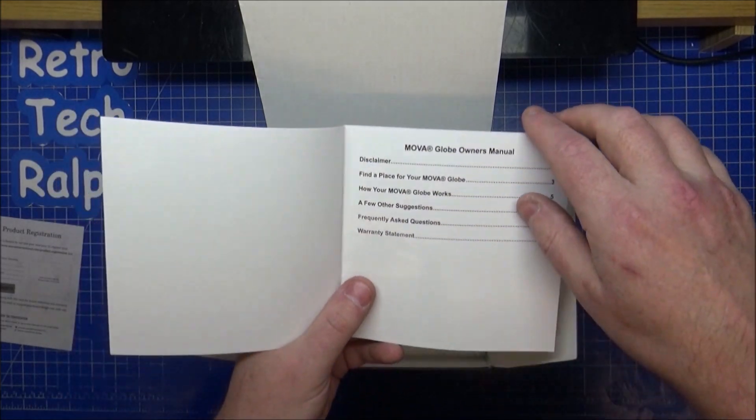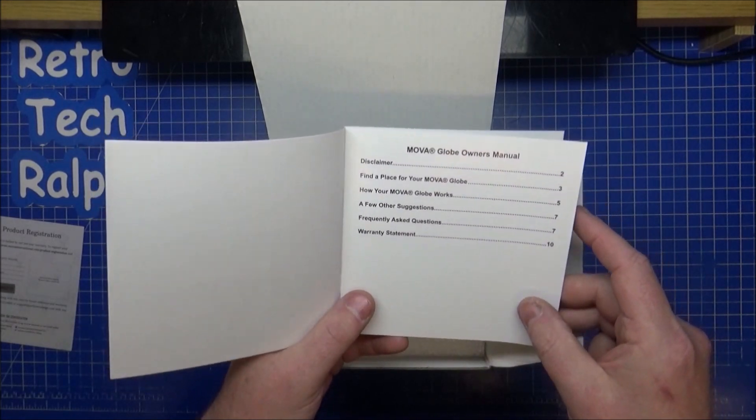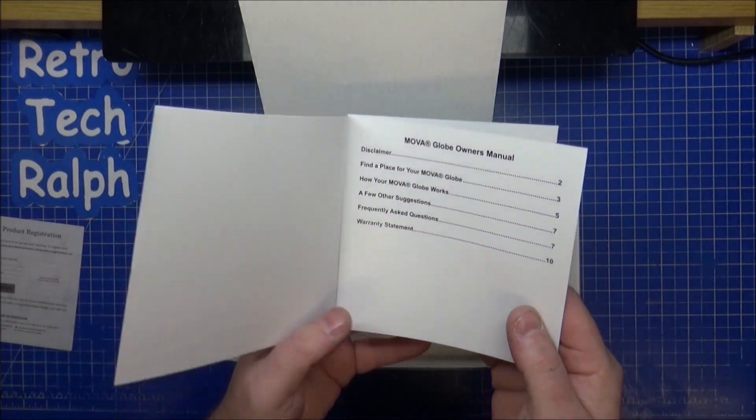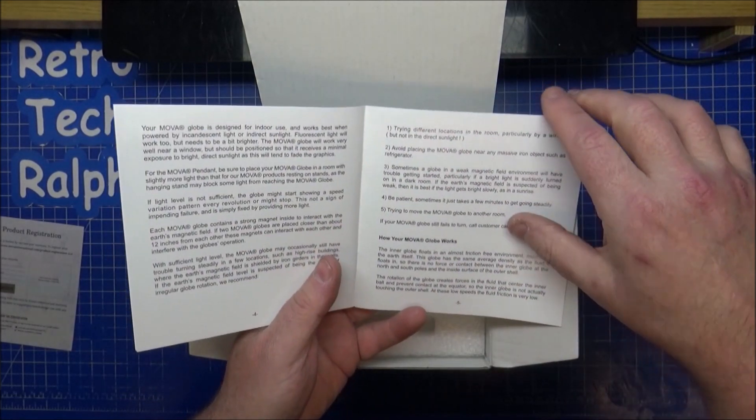User manual. Usual stuff. Disclaimer, how to place or find a place for your MOVA globe, how to move it, how the globe works, a few suggestions, free to ask questions and warranty statement.